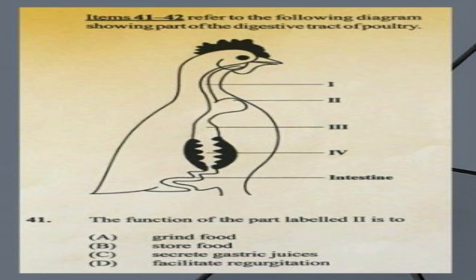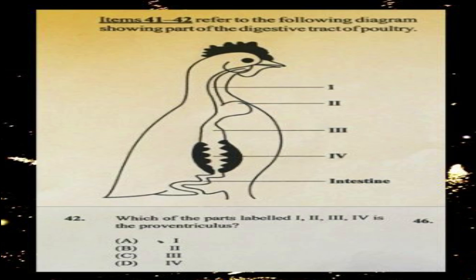Questions forty-one and forty-two refer to a diagram showing parts of the digestive tract of poultry. Question forty-one: the function of the part labeled two is to A) grind food, B) store food, C) secrete gastric juices, D) facilitate regurgitation. The answer is B, store food — the part labeled two is the crop. Question forty-two: which part is the proventriculus? The answer is C, three.